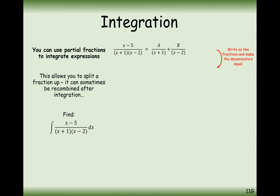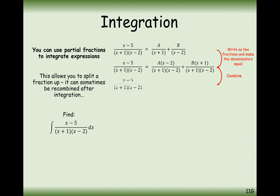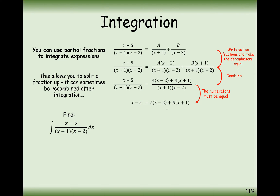Let's recap how we're going to split our fraction up into partial fractions. We multiply through by (x plus 1)(x minus 2), or you can think of it as combining the fractions. Multiplying through gives us x minus 5 equals A(x minus 2) plus B(x plus 1). Now we substitute in strategic values of x to make one of the coefficients disappear.